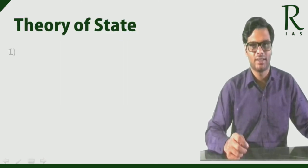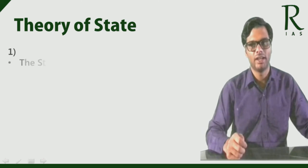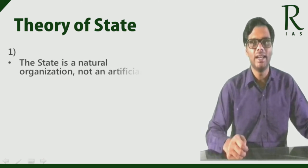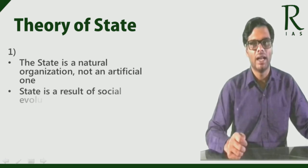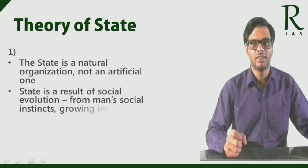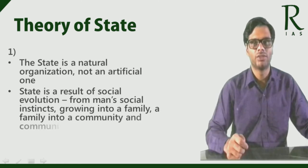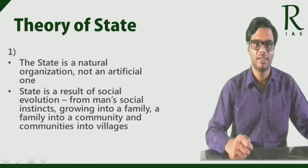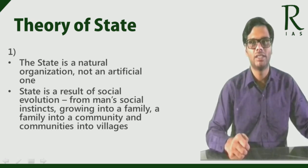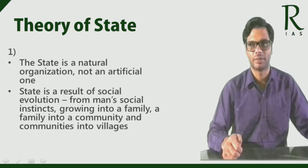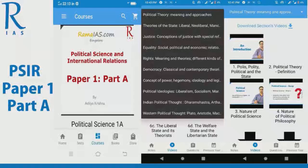The chief characteristics of Aristotle's theory of state are: the state is a natural organization — it is not an artificial one. Unlike Plato's ideal state, Aristotle's state is a result of social evolution, building from man's social instincts, growing into a family, a family into a community, and communities into villages and the village into a state.